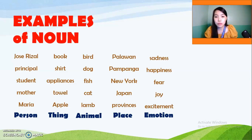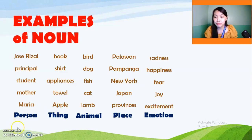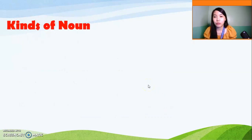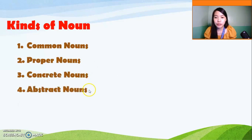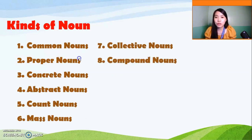If you are a keen observer, you may notice that some of these words are written in capital letters, some in small letters, and some are two words. Later on, we will be discussing them. Now let us go to the kinds of nouns. We have eight kinds: common nouns, proper, concrete, abstract, count, mass nouns, collective, and compound.